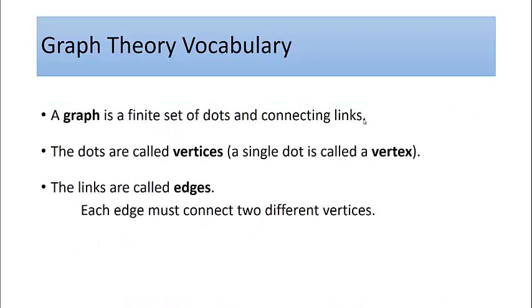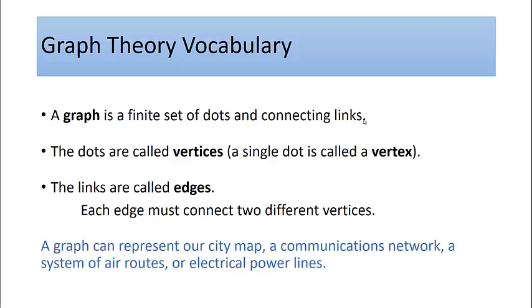A graph is just a finite set of dots and connecting links. The dots are called vertices with a single dot being called a vertex, and the links are called edges. Each edge must connect two different vertices. A graph can represent our city map, a communications network, a system of air routes, electrical power lines, pretty much anything.